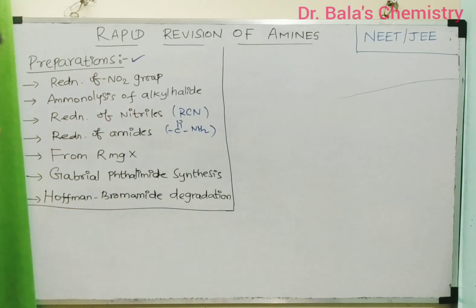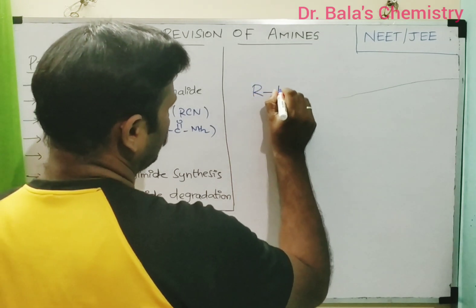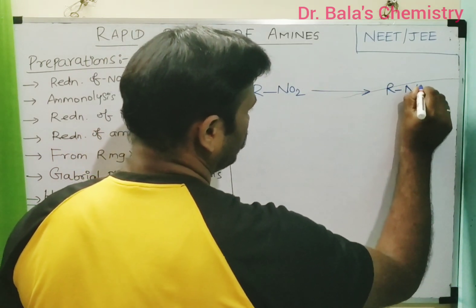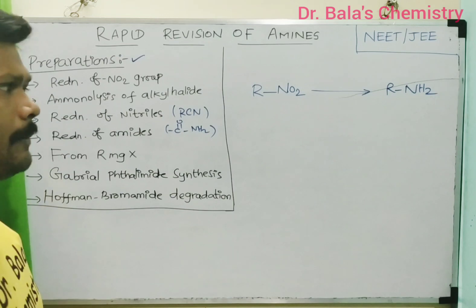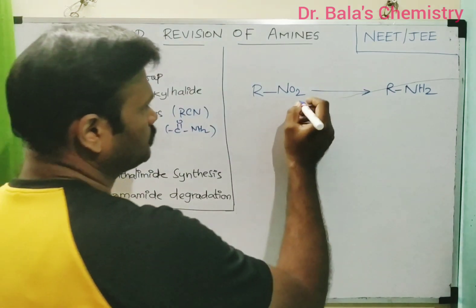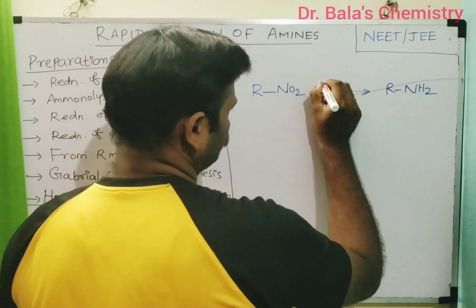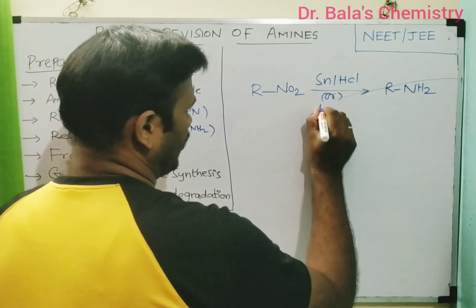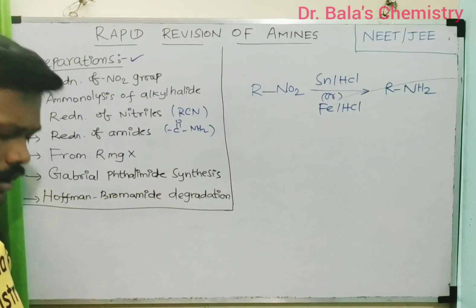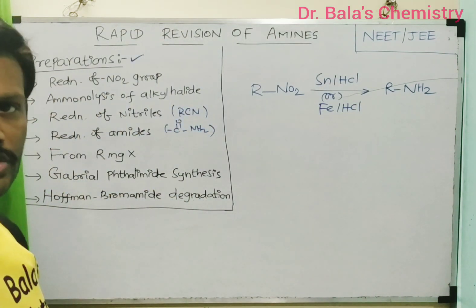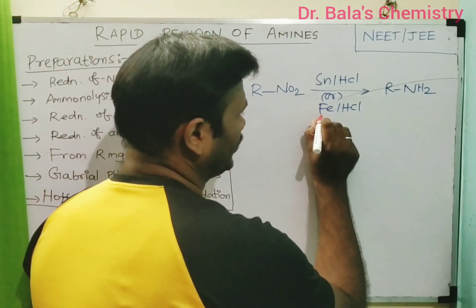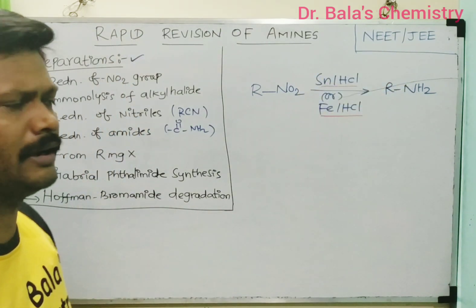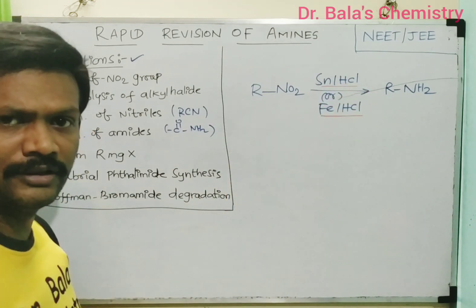For reduction of the NO2 group: R-NO2 is converted to R-NH2 by reduction. One method is chemical reduction. For example, we use tin and HCl (Sn/HCl) or iron and HCl (Fe/HCl). These act as good reducing agents — when metal reacts with HCl, hydrogen gas is liberated, which reduces the nitro group.